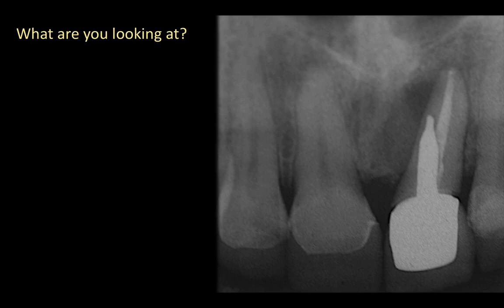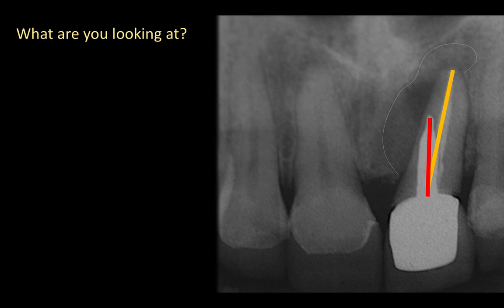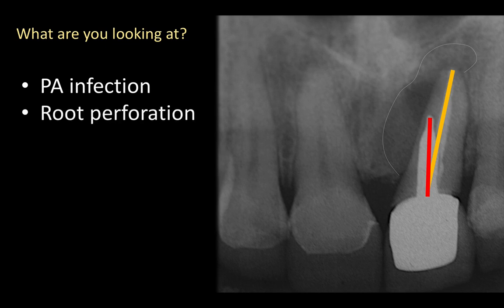Look at the radiograph for a second. We're seeing tooth number nine with root canal treatment and a post. We see a periapical radiolucency mostly on the mesial aspect of the root, maybe extending to the periapical area. And we see an angle of the root and a totally different angle of the post, which is obviously the source of this problem. So you're looking at a periapical infection and probably a root perforation or fracture of the root.